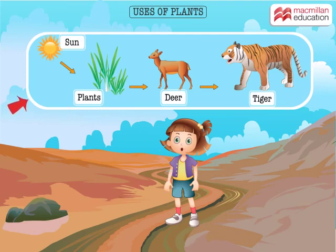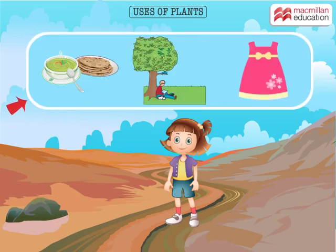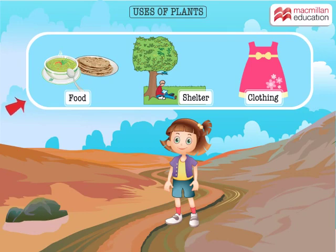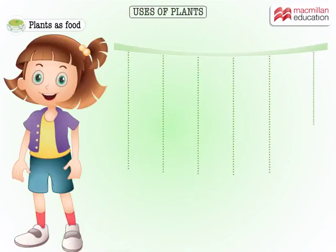Without plants, animals too cannot survive. And we, the human beings, we depend on plants even for our basic necessities like food, shelter, and clothing. Hard to believe? We eat different parts of plants — take a look at this.